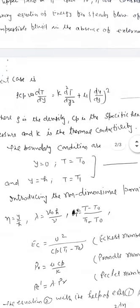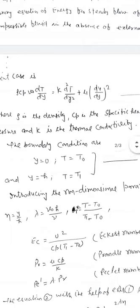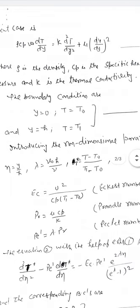The boundary conditions are: at y = 0, T = T0, and at y = h, T = T1. This is equation number 3.